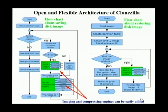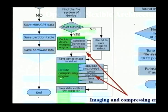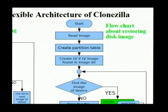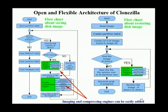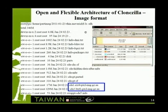Clonezilla has an open and flexible architecture. The left flow chart is about saving disks — you can decide the image engine and compress engines. Even if the machine has a multi-core processor, it can use a parallel compression algorithm, for example PIGZ. The other flow chart is about restore. Because it's open, it's very easy to add a new image engine and compress engines. If the compress engine can support pipeline stdin/stdout, it will be easy to add.